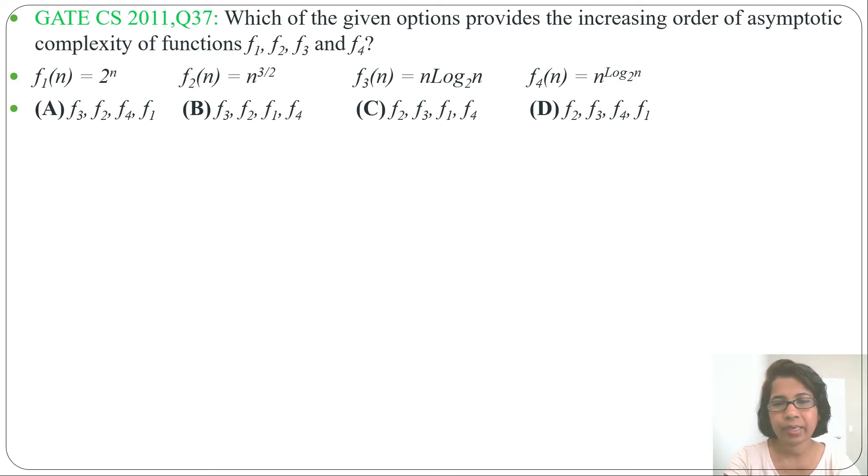f3 of n equals n log n base 2. This is a linear plus logarithm. Next, f2 of n and f4 of n are polynomial. f2 of n equals n power 3 by 2 and f4 of n equals n power log n base 2. n power something, that is polynomial. Next is exponential.